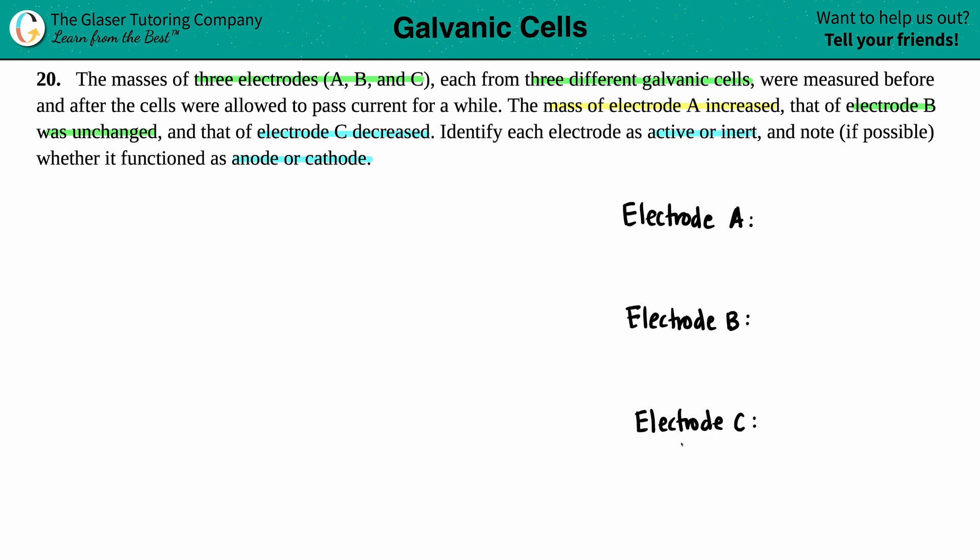Now, first things first, we have to identify each electrode as either active or inert. The only thing they told us was what was going on with the masses. The mass of electrode A increased. Electrode B, the mass was unchanged, so the mass stayed the same. And then the mass of electrode C decreased.